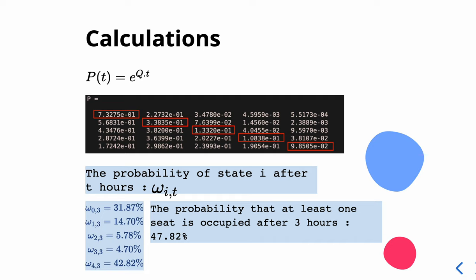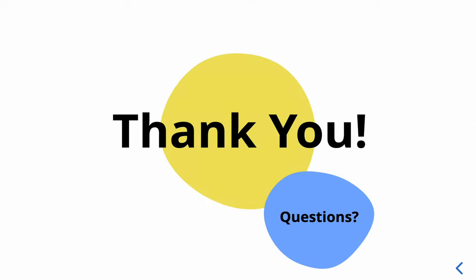The final result is that the probability that at least one seat is occupied after three hours is 47.82 percent. We can see there are many numbers in P(t), so the result is 42.82 percent. This is my homework for week 9, the Barbershop problem. Thank you for your attention.